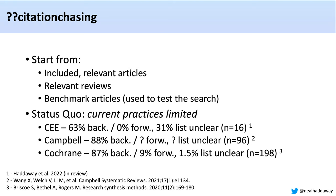In Cochrane reviews, 87% — a similar number — had performed backward citation chasing, and only 9% had performed forward citation chasing, a little bit better than the others. And in only 1.5% of cases was the list of citation chasing records not clear. So you can see that a lot more could be done.